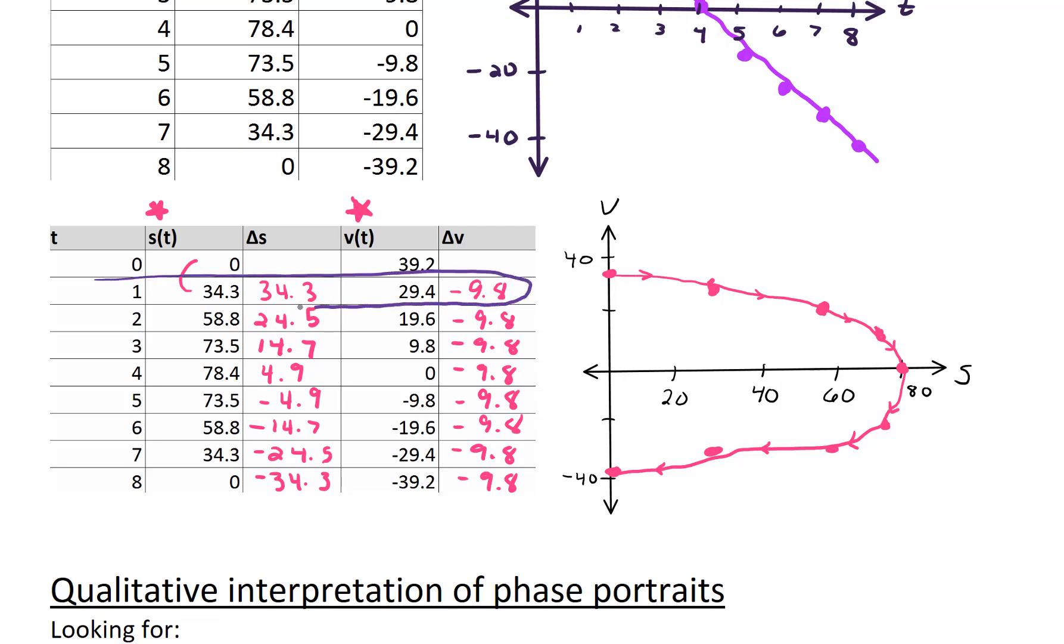For example, if we do the change, if we subtract 34.3 minus 0, that turns out to be a 34.3. And similarly, if we subtract 29.4 and 39.2 to get our change in velocity, that's a negative 9.8. Okay, so let's take a look at one particular line of data. So let's look right here. When time equals 1, what does this say? It says that from time equals 0 to time equals 1, our change in position is positive. And our change of velocity is negative. In other words, when we're starting off at this point, the change as we go from time equals 0 to time equals 1, we're heading in the positive s direction, the positive position function. And we're going to head in the negative velocity function. And so what that gives us is it gives us an arrow that's pointing to the right and down.